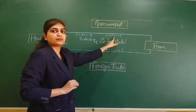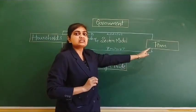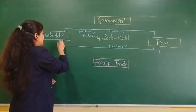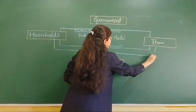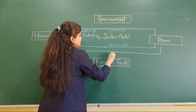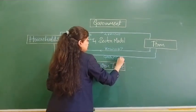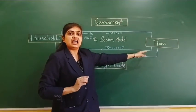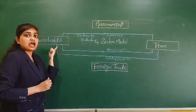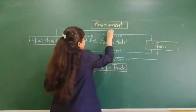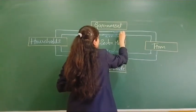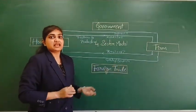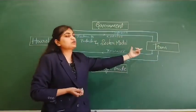So the households are giving factors of production to the firm, and the firm is giving payment in return. By using these factors of production, firms will manufacture goods or services. These manufactured goods or services are again sent to the households. Households are making payment in return for purchasing those goods or services. By this, the relationship between households and firms is established.